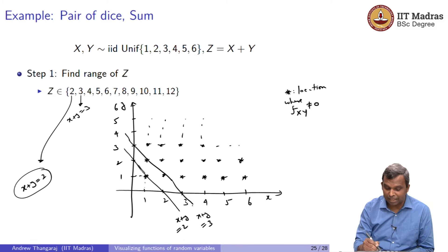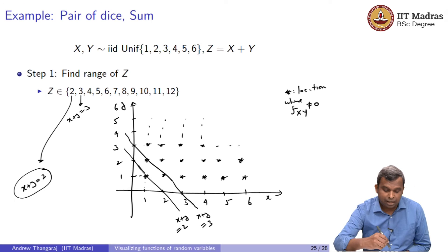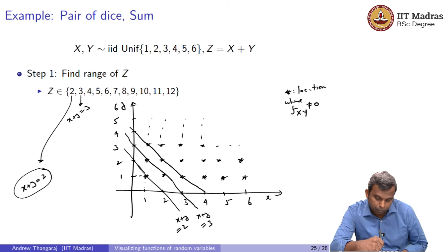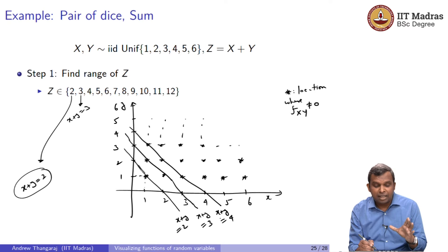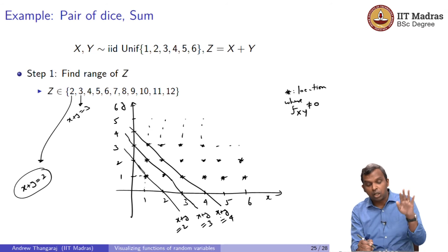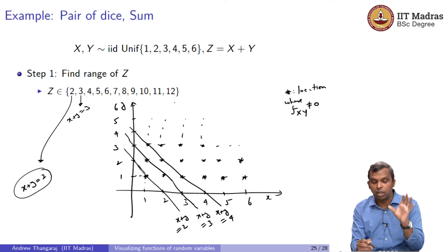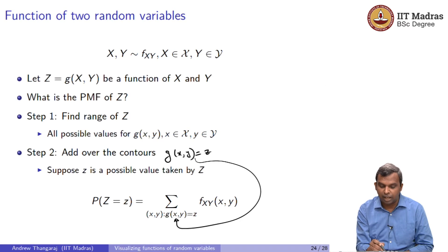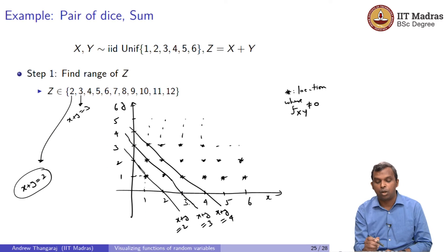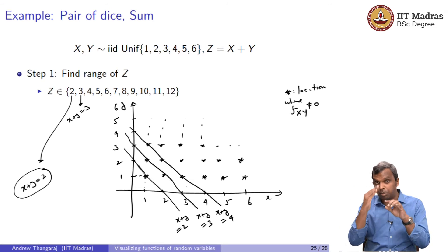That is x plus y is equal to 3. Then, you have these 3 points, which give you 1, 3, 2, 2, 3, 1. And that will all fall on x plus y equal to 4. This is exactly what you are doing when you do this. Set of all x, y such that g of x, y is equal to z. You have to do it on this plot. This needs a little bit of visualization.